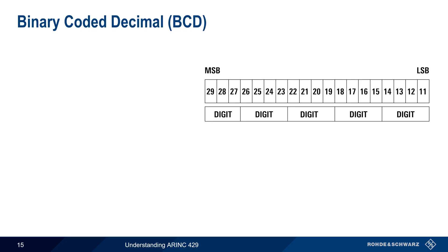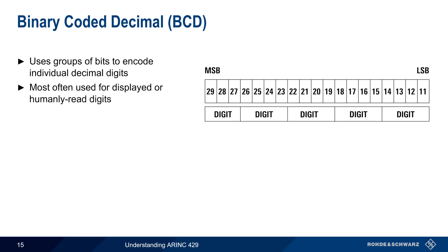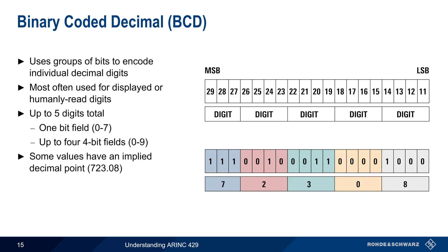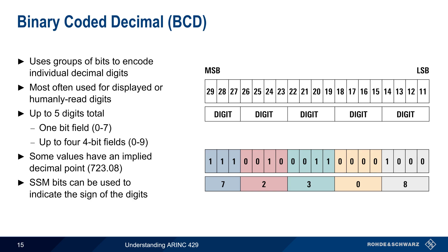Another method of encoding numbers is binary coded decimal, or BCD, where groups of bits are used to encode individual decimal digits. This is most often used for displays or other human-readable outputs. A BCD formatted data field can contain up to 5 digits: one field is only 3 bits and can encode numbers 0 through 7, while the other four fields are 4 bits and can encode 0 through 9. Although not explicitly signaled, these values may have an implied decimal point. The SSM bits can also be used to indicate the sign of the BCD digits when necessary.